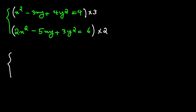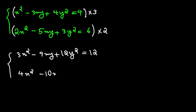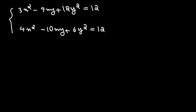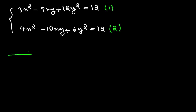After multiplying, we have 3x squared minus 9xy plus 12y squared equals 12 (equation 1), and 4x squared minus 10xy plus 6y squared equals 12 (equation 2). Subtracting equation 1 from equation 2 gives us x squared minus xy plus 6y squared equals 0.